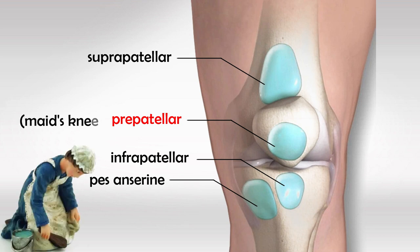In the old times, maids used to sit on their knees when serving food and such, so they would commonly have knee bursitis. So nowadays we call the pre-patellar bursitis "maid's bursitis" or "maid's knee."